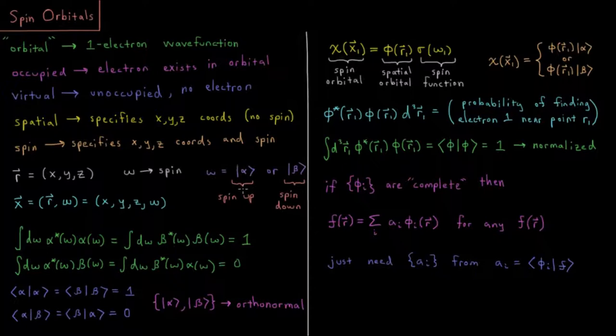And these spin functions are going to be orthonormal to one another, as we saw back in the quantum chemistry playlist. So the integral over the spin variable of alpha star alpha is going to be 1, as is the integral over the spin variable of beta star beta. Complex conjugate in each of those cases, each being defined equal to 1, meaning it's normalized.